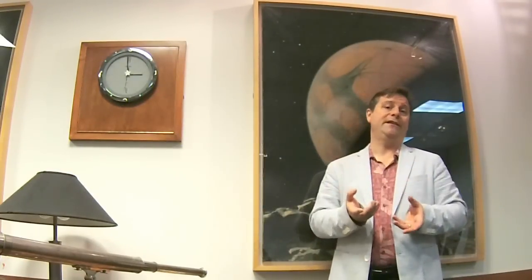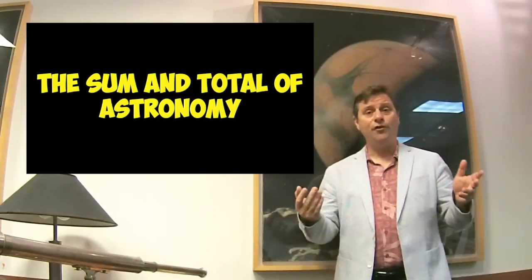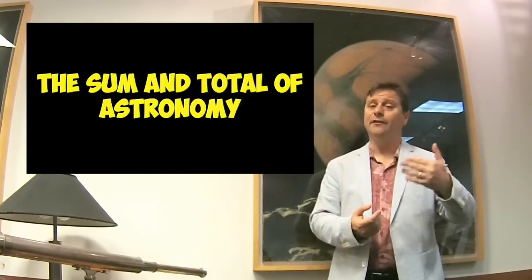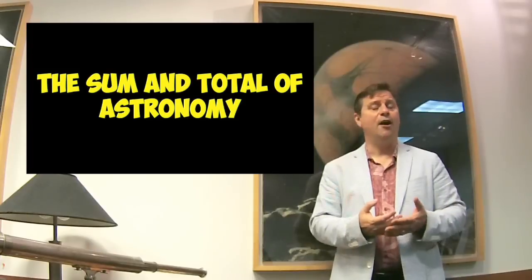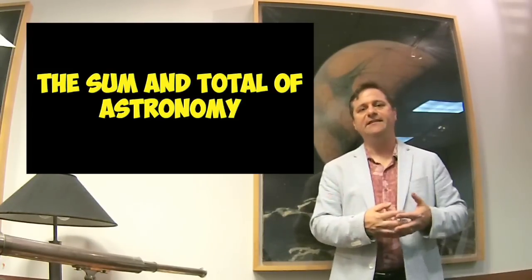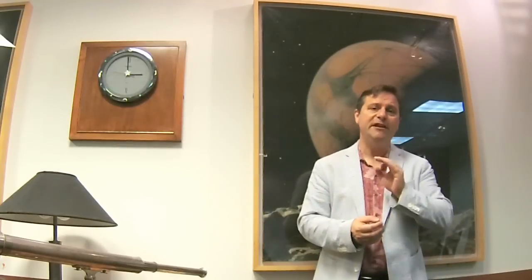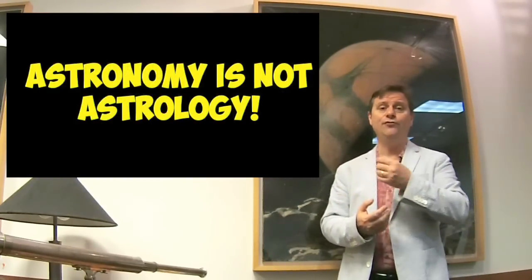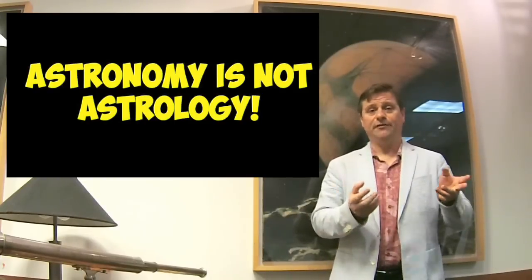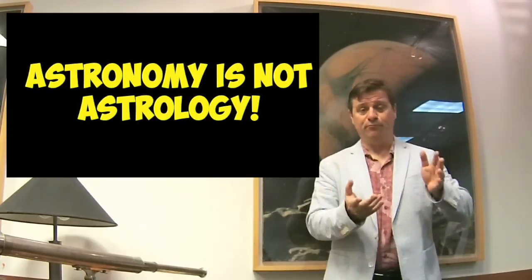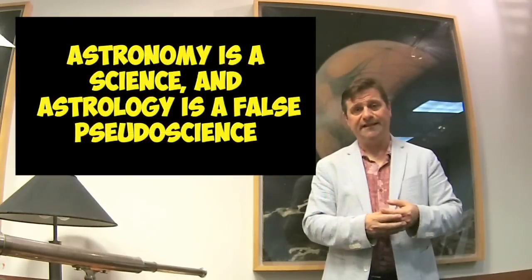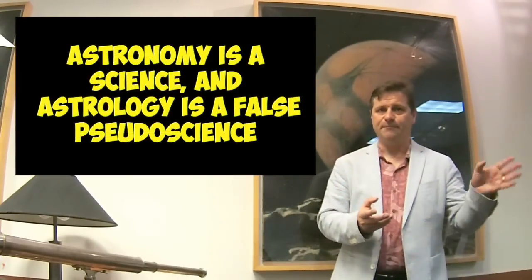So astronomy is the subject matter that covers all these types of objects and tries to define how they're born, how they live, how they die, what they do when they're living, how they actually come to be, and what processes by which they act. Astronomy is not astrology. Basically, astronomy is a science and astrology is a pseudoscience.